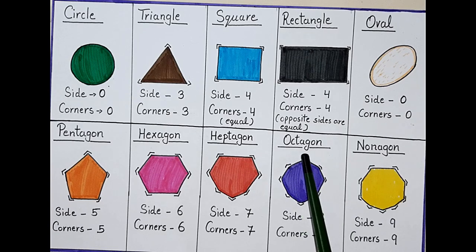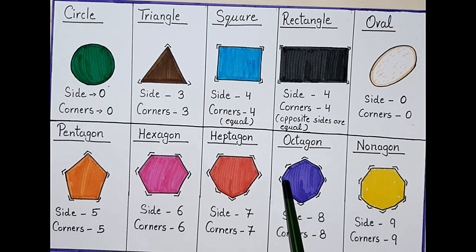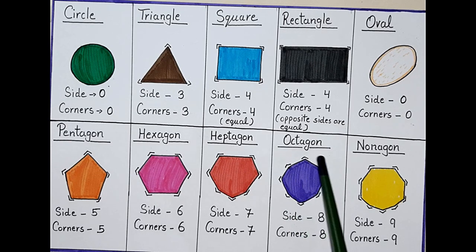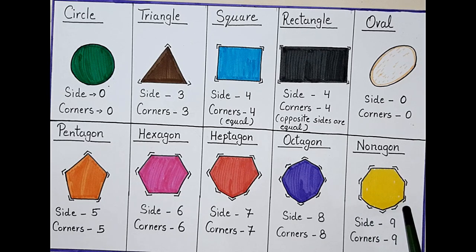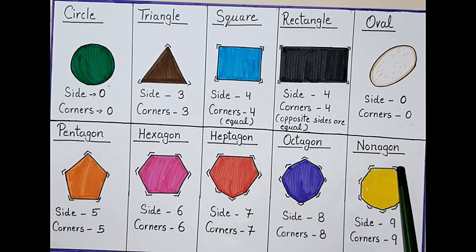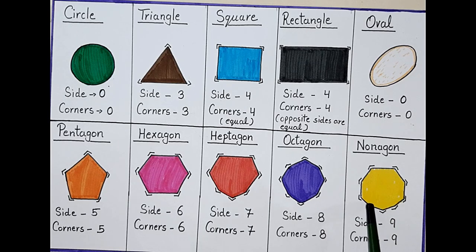And 7 corners: 1, 2, 3, 4, 5, 6, 7. And it has 9 corners. 1, 2, 3, 4, 5, 6, 7, 8, 9.